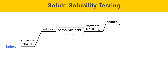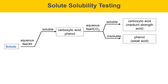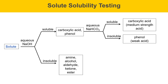If it's soluble in aqueous NaHCO3, it means your compound is a carboxylic acid, a medium strength acid with a pKa of about 5. If the compound was soluble in NaOH but insoluble in NaHCO3, it means you have a weak acid — that could be a phenol, which has a pKa of about 10. If your solute is insoluble in aqueous NaOH, you could have either an amine, an alcohol, an aldehyde, a ketone, or an ester.